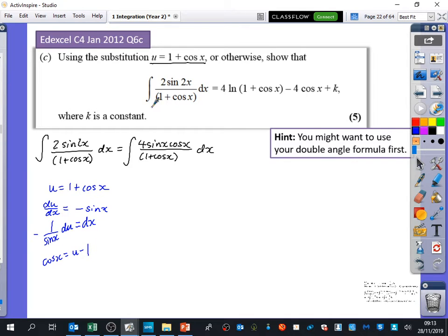There are no limits here, so I only need to do the integration part. Now if we actually continue with doing this, we can start doing the replacing stuff. So we have the integral of 4sinx, cosx is u-1, and 1+cosx is u, and dx is minus 1 over sinx du. So we get that nice cancelling out of the sinx here and here.